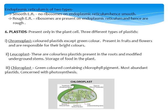Chloroplasts are green-colored plastids. They contain a pigment called chlorophyll and are the most abundant plastids. They are concerned with photosynthesis. Chloroplasts are called the kitchen of the cell because they use solar energy to manufacture food for the plant using carbon dioxide and water. Like mitochondria, each chloroplast is bounded by two membranes.